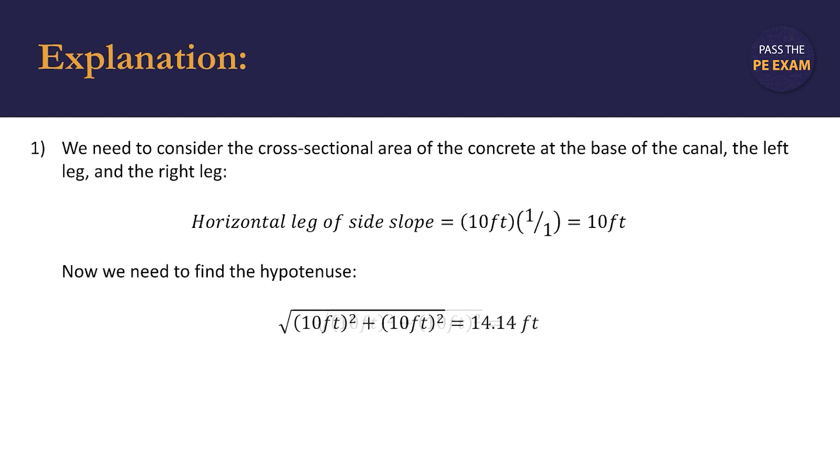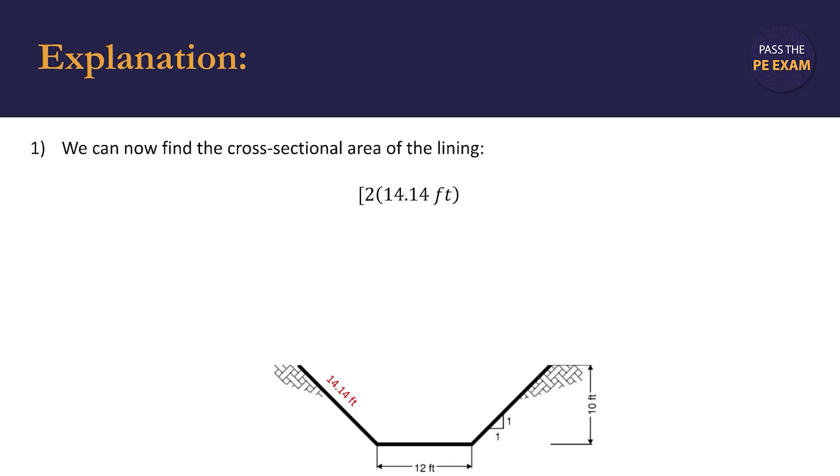We arrive at 14.14 feet for the distance of the hypotenuse, and with that we can now find the cross-sectional area of the lining. So quantity 2 times 14.14 feet plus 12 feet for the base times the thickness, and we were told that thickness was 6 inches. So multiplying by 6 inches over 12 inches per foot, we arrive at 20.14 square feet as the cross-sectional area of the concrete required.